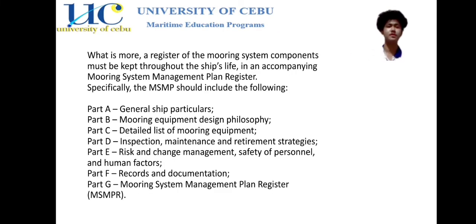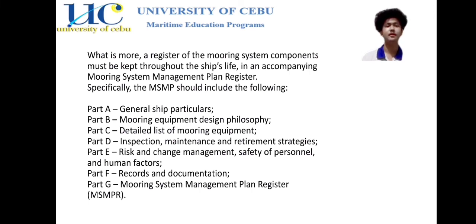A register of mooring system components must be kept throughout the ship's life in an accompanying Mooring System Management Plan Register. The MSMP should include the following parts: Part A, General Ship Particulars; Part B, Mooring Equipment Design Philosophy; Part C, Detailed List of Mooring Equipment; Part D, Inspection, Maintenance, and Retirement Strategies; Part E, Risk and Change Management, Safety Personnel, and Human Factors; Part F, Records and Documents; and Part G, the Mooring System Management Plan Register.